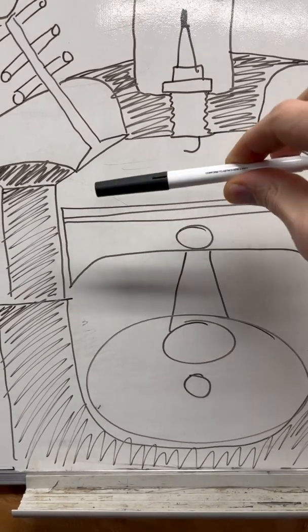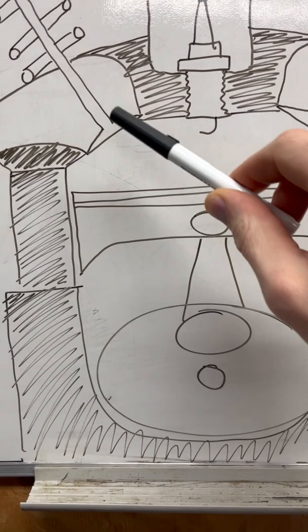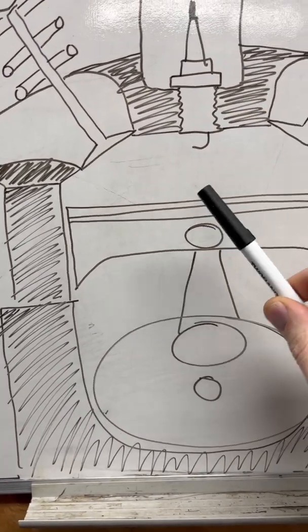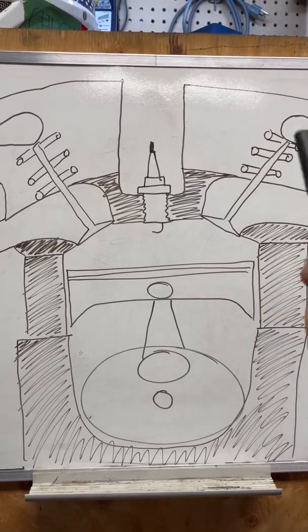Then the spark plug fires, pushing the piston back down. After the piston is at bottom dead center, the exhaust valve opens and the piston comes back up. These gases have nowhere to go except out the exhaust valve. This is known as suck, squeeze, bang, and blow. Four strokes per cycle.